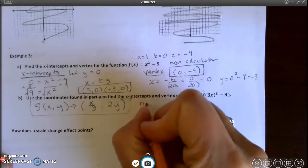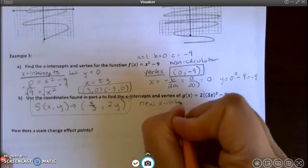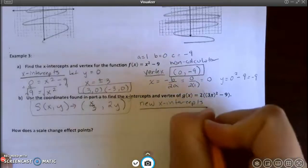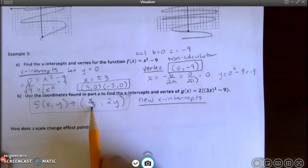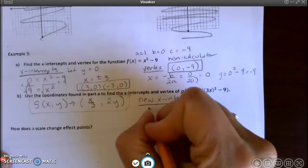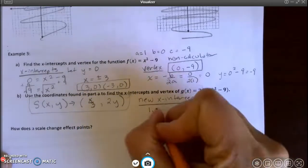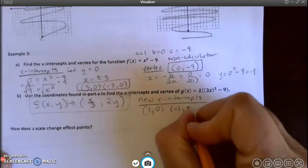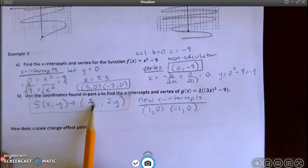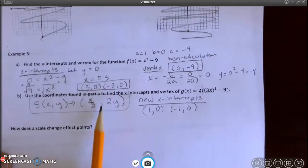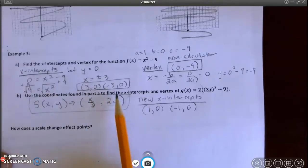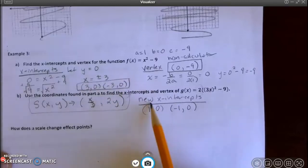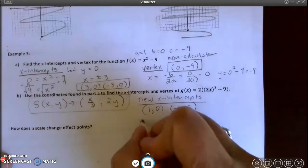So that tells me that my x's are going to be divided by 3 and my y's are going to be multiplied by 2. This is what is actually going to happen. So my new x-intercepts, I'm going to divide my x's by 3. 3 divided by 3 becomes 1. 0 stays 0. Negative 3 divided by 3 becomes negative 1. So all I'm doing is following the rule. So I'm dividing my x-coordinates by 3. I don't have any y's to multiply. 2 times 0 is simply still 0. 2 times 0 is still 0. So these are my new x-intercepts and my new vertex.